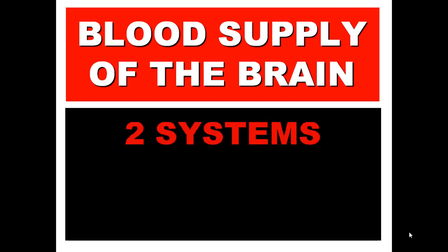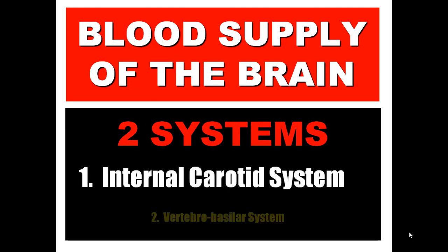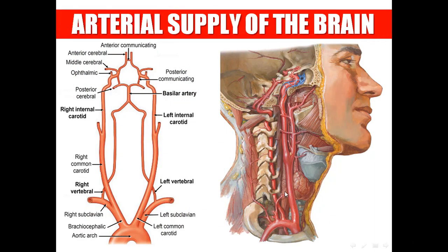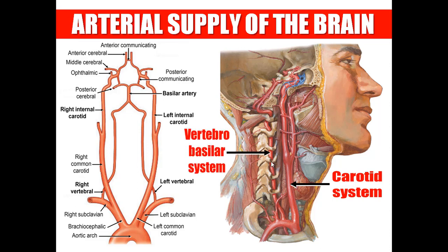Just reminding you that the brain is supplied by two systems: the internal carotid system and the vertebro-basilar system. The common carotid artery divides into external carotid and internal carotid arteries. The vertebral artery unites with the opposite one to form the basilar artery, giving two posterior cerebral arteries.